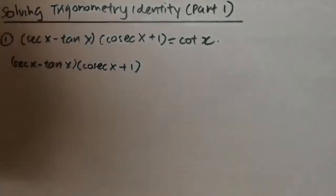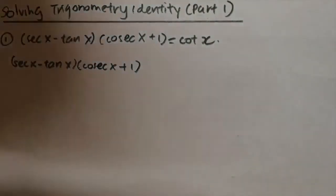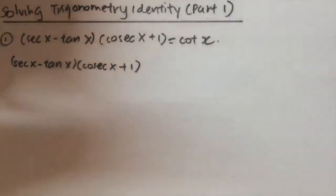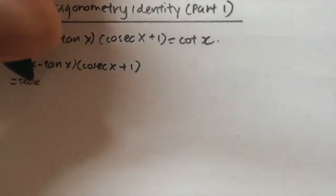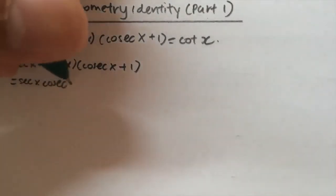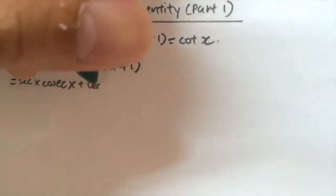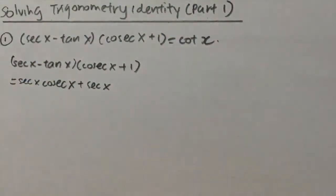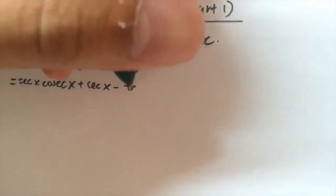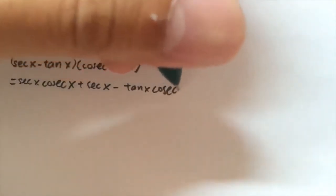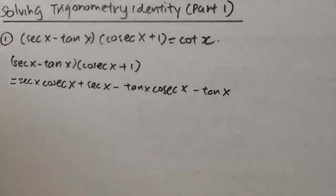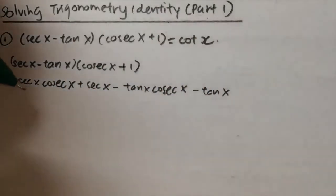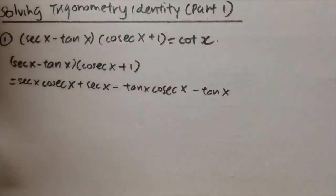First thing, you need to expand this out. So you will get sec x·cos x plus sec x, and that's minus tan x·cos x minus tan x. So you get: sec x·cos x + sec x - tan x·cos x - tan x.